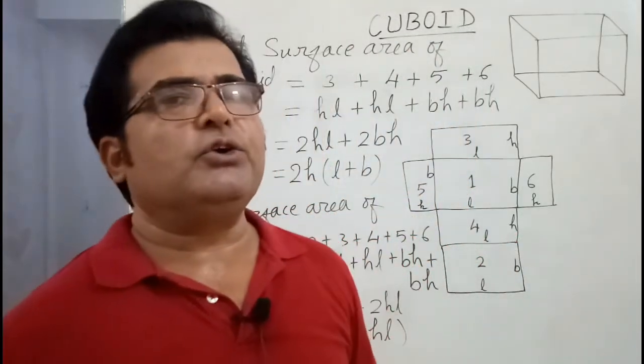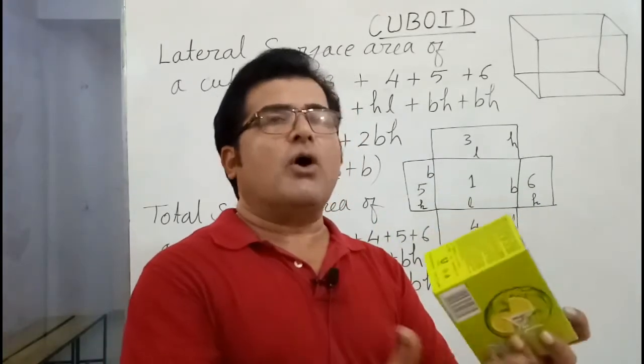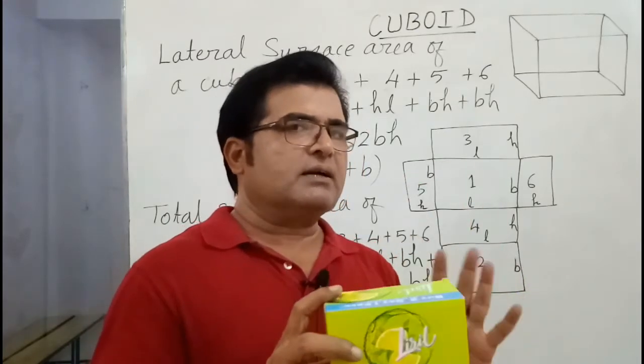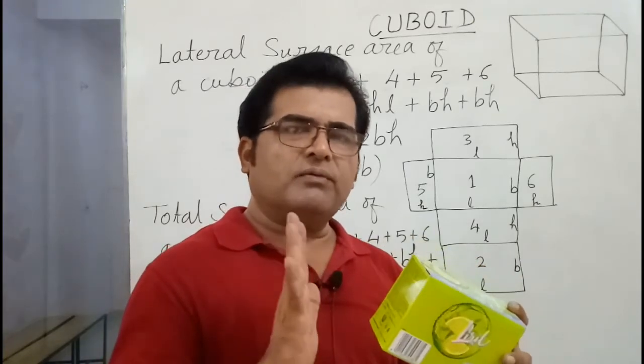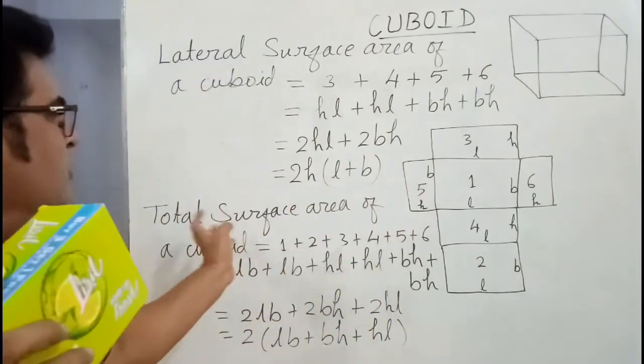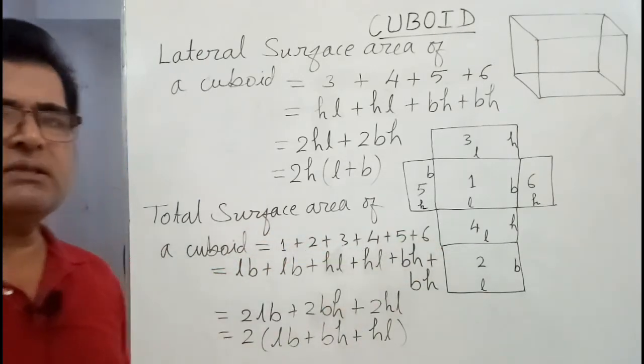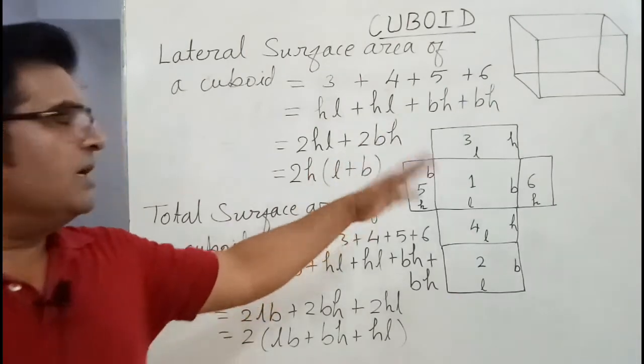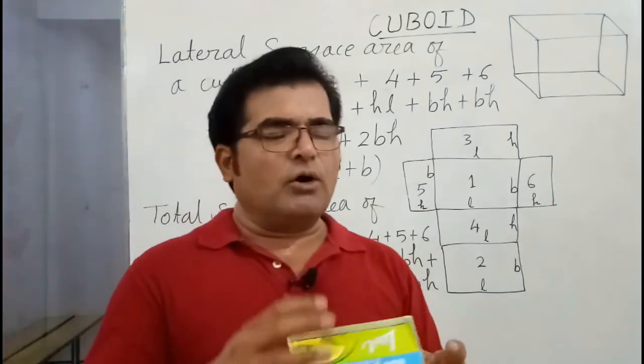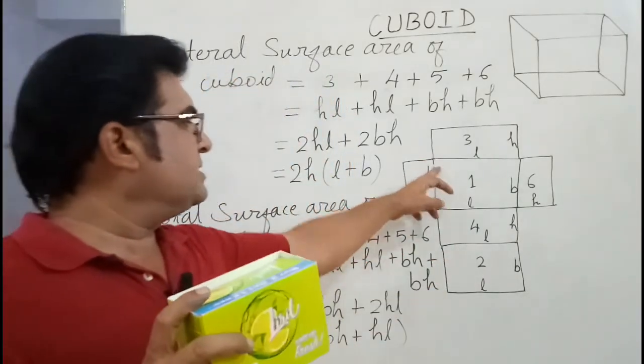Now we are going to find total surface area of a cuboid. Total, the word total itself says that we have to find for all. We have to find area of all 6 rectangles. In lateral surface we have done area of 4 faces. Here we have to do for all 6 faces. So you write total surface area of a cuboid equal to area of face number 1 plus 2 plus 3 plus 4 plus 5 plus 6. Now top and bottom face, their L into B will be used, length into breadth only. That is the face number 1 and 2.